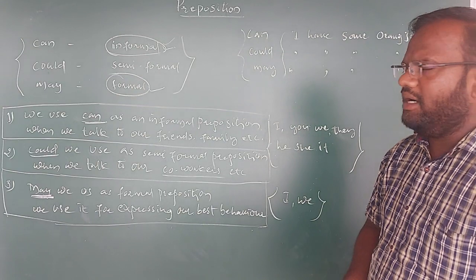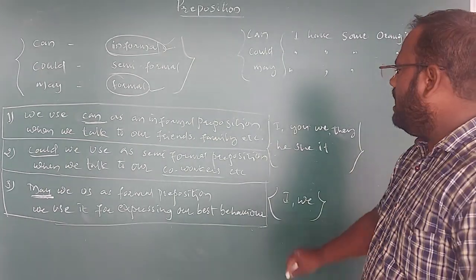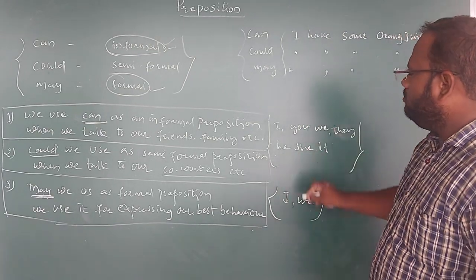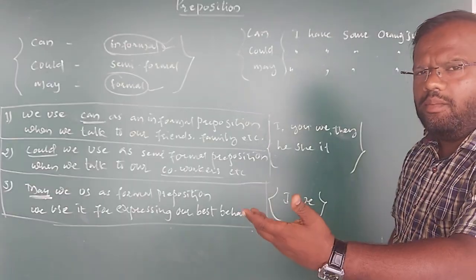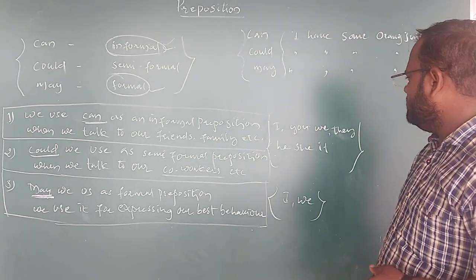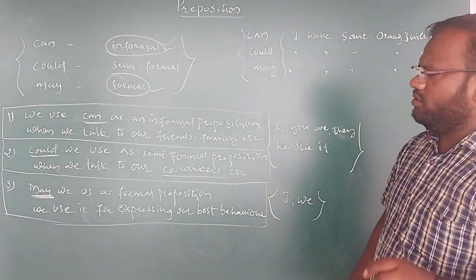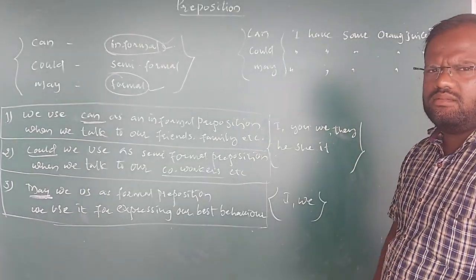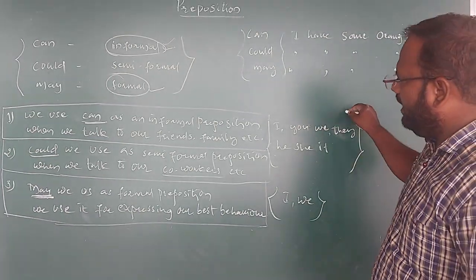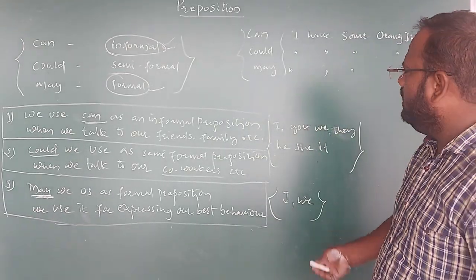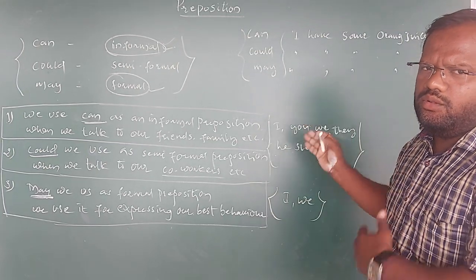Most of the time, can and could contain all pronouns: I, we, you, he, she, it, and they. For example: 'Can I take your pen?', 'Can you give me your pen?', 'Can we go to school?', 'Can they play?', 'Can he do it?', 'Can she do it?', 'Can it do it?' All seven pronouns can be used with can, and the same applies to could.